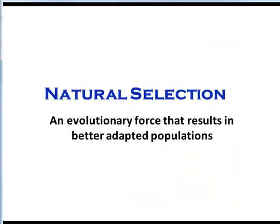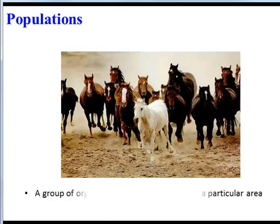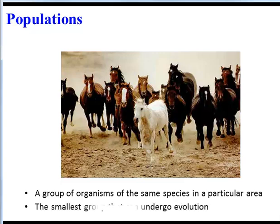Natural selection is a type of evolution that results in better adapted populations. To explore natural selection, we're going to start by defining what a population is. A population is just a group of organisms that belong to the same species and are living in a particular area. For example, this group of horses — all very similar organisms that can interbreed and are in a particular environment. Populations are the smallest group that can actually undergo evolution.